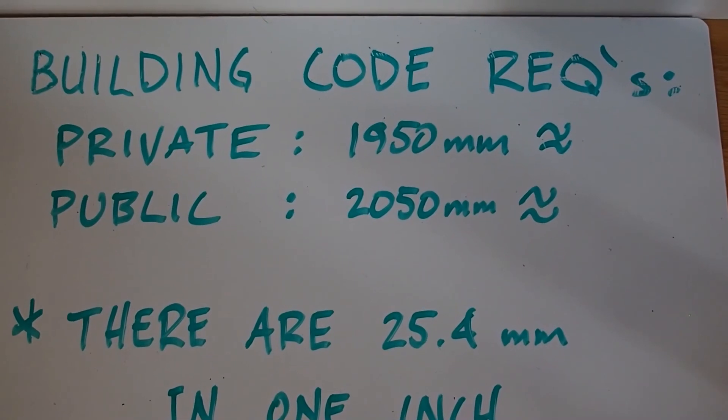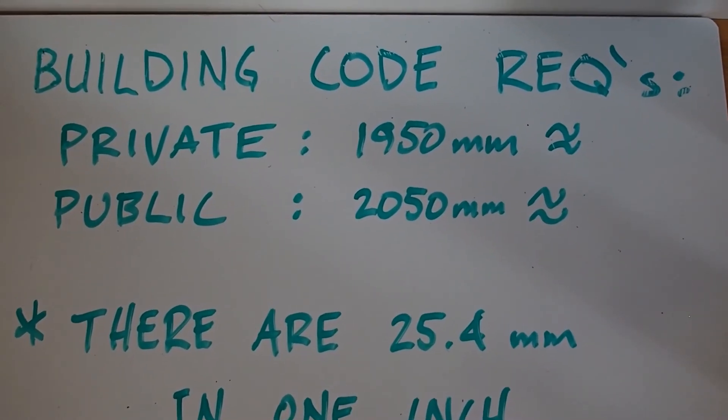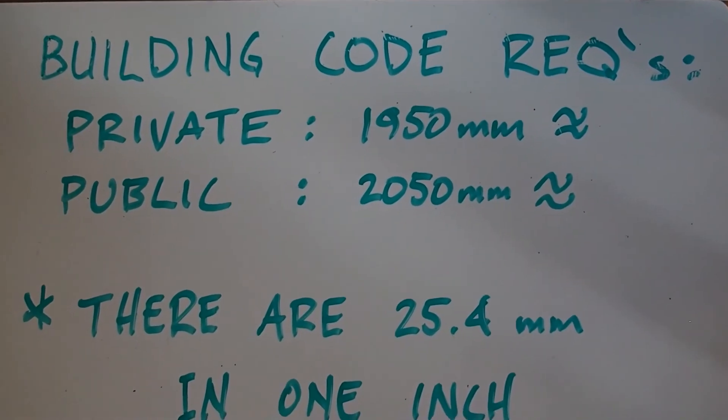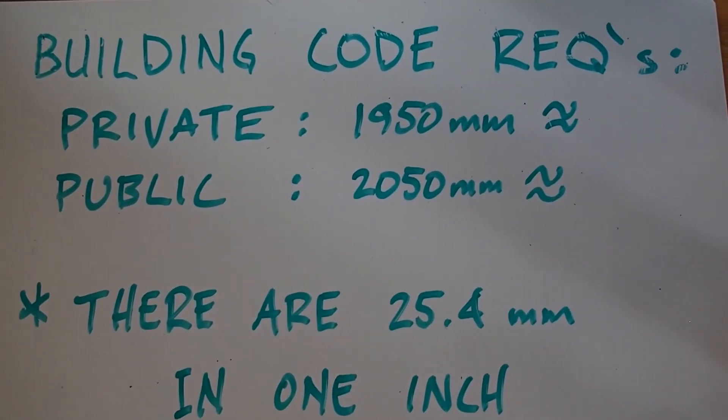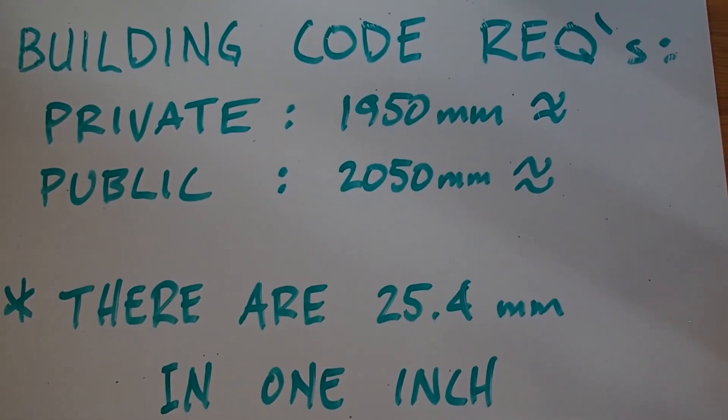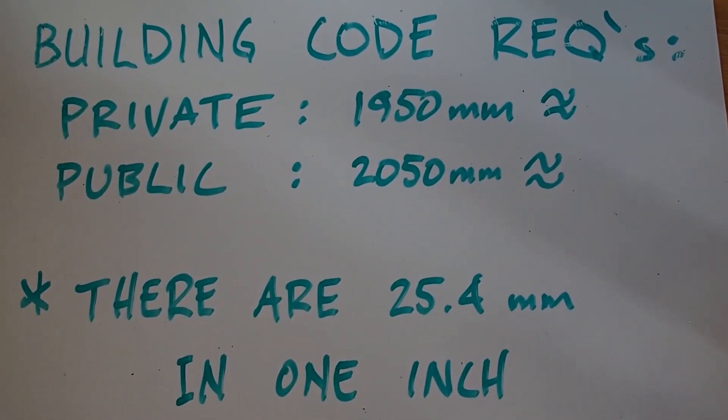So here are the building code requirements. Building code in BC says that private stairs have to have a headroom clearance of 1950 millimeters. Public stairs have to have 2050 millimeters. These are numbers that are worth memorizing.